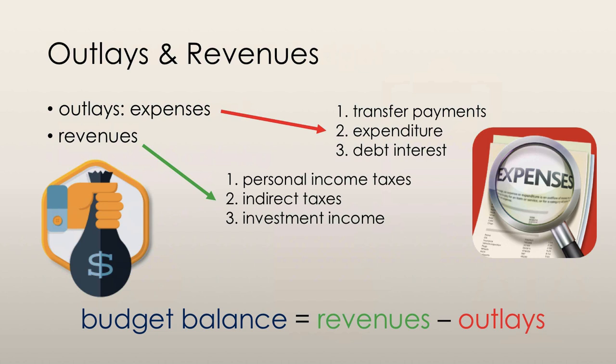The budget balance is equal to the government's revenues minus its outlays. If the budget balance is positive, then we refer to it as a budget surplus because the government has earned more money than it has spent. If the budget balance is negative, then the government has spent more money than it has earned, so it is referred to as a budget deficit. A balanced budget arises when the government has spent exactly the same amount of money as it has earned, which would mean that the budget balance equals zero.